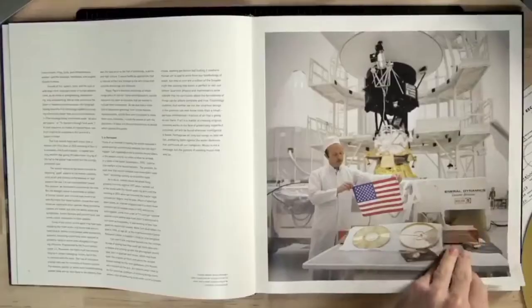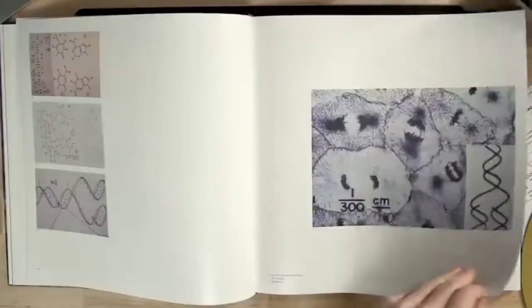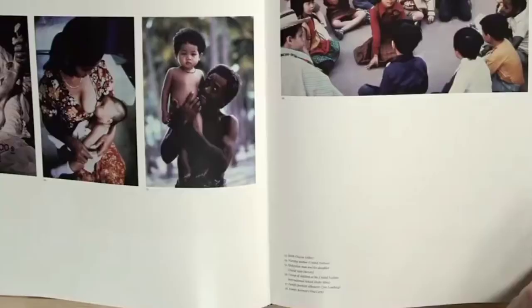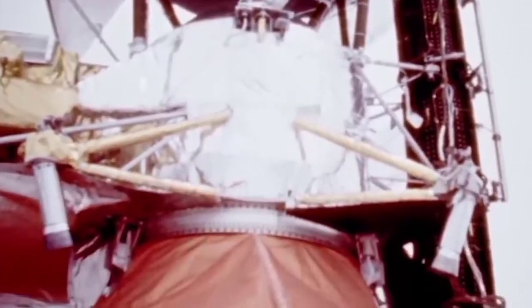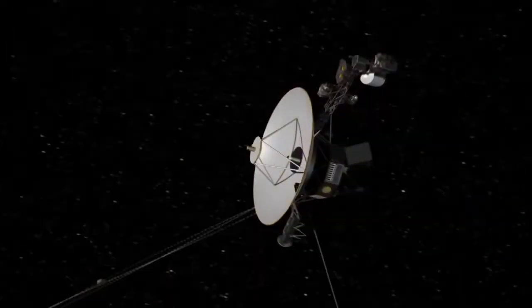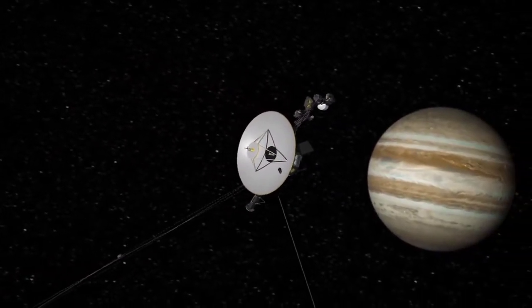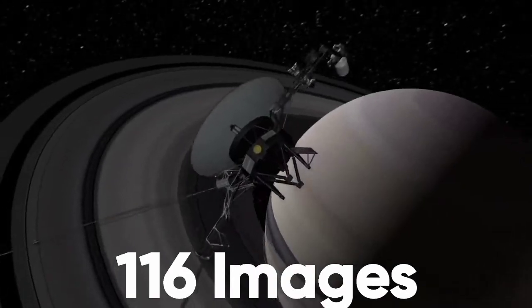You may think that the images included on the record are printed out or in some digital form, but the golden record is not a digital disk. The computer system of the Voyager is only 69 kilobytes large. That is not enough for an image, talk more of 116 images and audio.